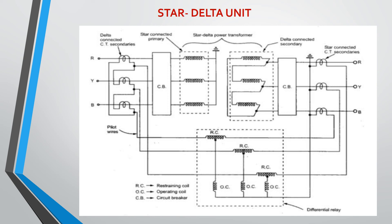The picture here depicts the differential protection technique applied to the star-delta power transformer. Star-delta means the primary side of the transformer is connected in star — you can see a neutral point — whereas the secondary side is connected in delta. To cope with the phase shift, the delta side of the power transformer must be connected to star-connected CTs, and the zero sequence current needs to be compensated with the help of delta-connected CT secondaries on the star side. These are then connected to the restraining and operating coils. Pilot wires are used in series with the restraining coils, and the combination of restraining coil and operating coil makes the differential relay.